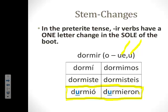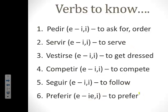Now let's move on to section three of your note guide. This rule about stem-changes applies to all IR stem-changing verbs in Spanish. However, in this unit we are just going to focus on seven verbs: pedir — to ask for or to order; servir — to serve; vestirse — to get dressed; competir — to compete; seguir — to follow; and preferir — to prefer. They are coded the same way as dormir, showing the present tense change first and the preterite stem change second.